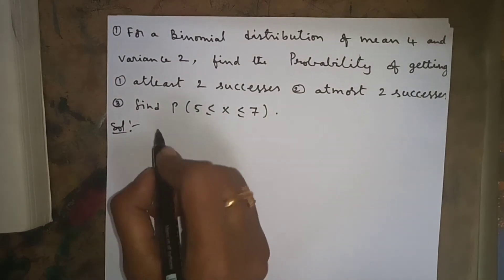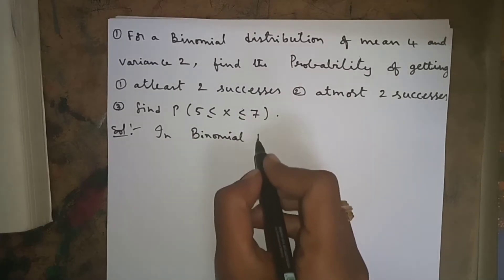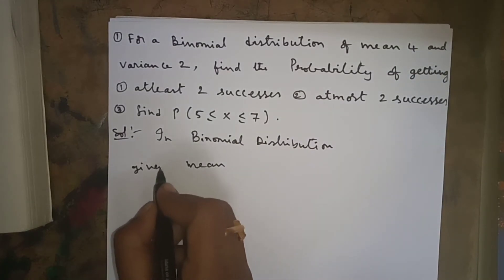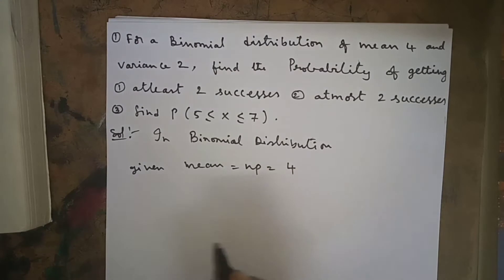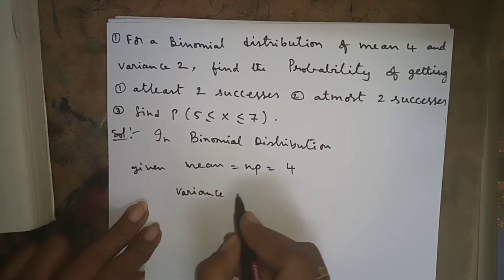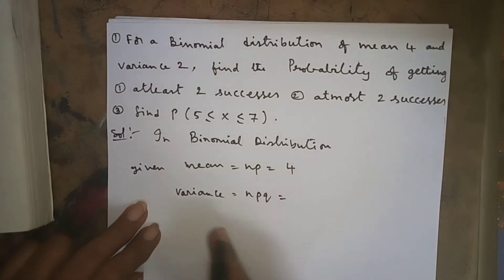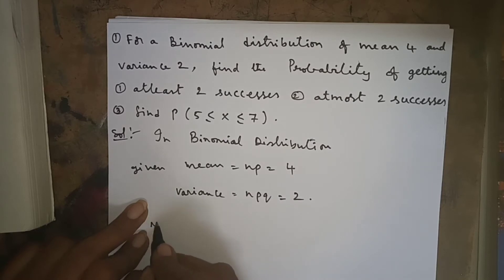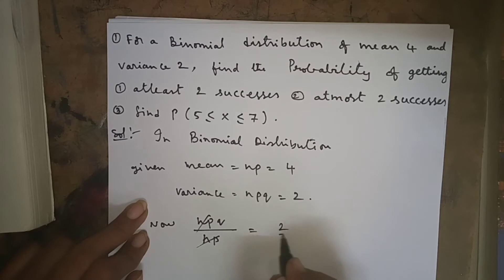Now coming to the problem: for binomial distribution, mean is given as 4 and variance is given as 2. We know that mean = np = 4 and variance = npq = 2. Dividing variance by mean: npq / np = 2/4, so q = 1/2.